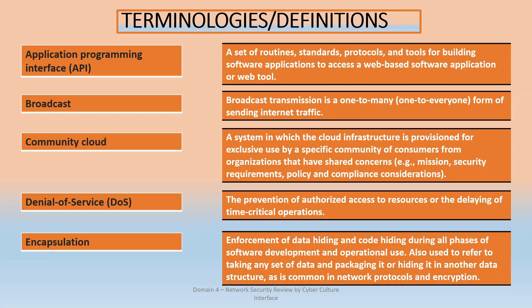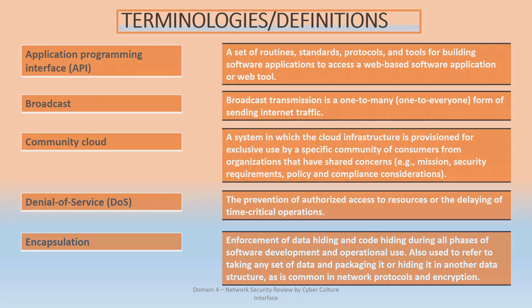Encapsulation comes into play when talking about the OSI model and network transmission — the TCP/IP model layers and data moving from one layer to another. Encapsulation is the encoding of data and hiding of code during transmission or software development. In cybersecurity, when transmitting data from one layer to the other, you encapsulate the data by encoding it so it can be transmitted safely and efficiently — hiding the data in a format understood by the receiving layer or device.